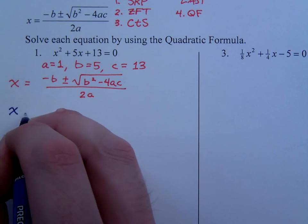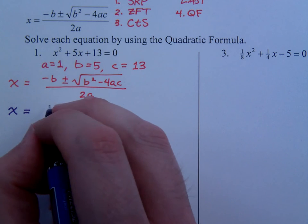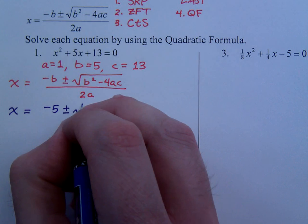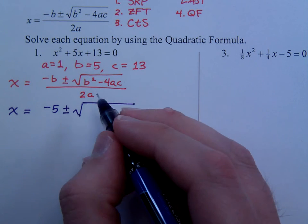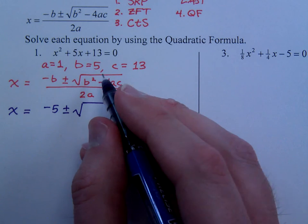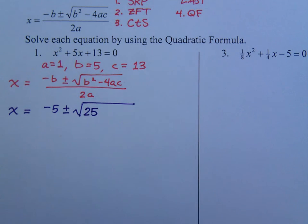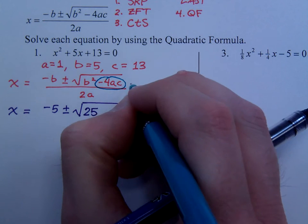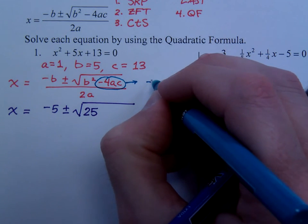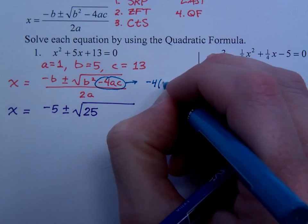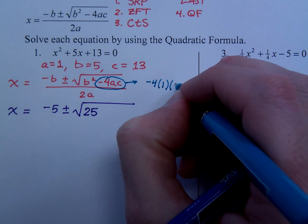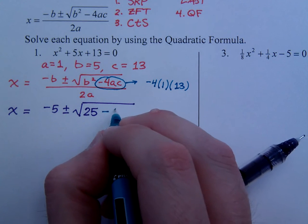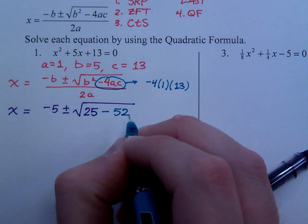So, here, x is equal to negative b, so that's the opposite of this guy, that's negative 5, plus or minus the square root, b squared, well, b is 5, so b squared is 25. The minus 4ac is something that I actually come over here to this side to work on. That's a negative 4 times a, which is 1, times c, which is 13. So, that's a negative 52.